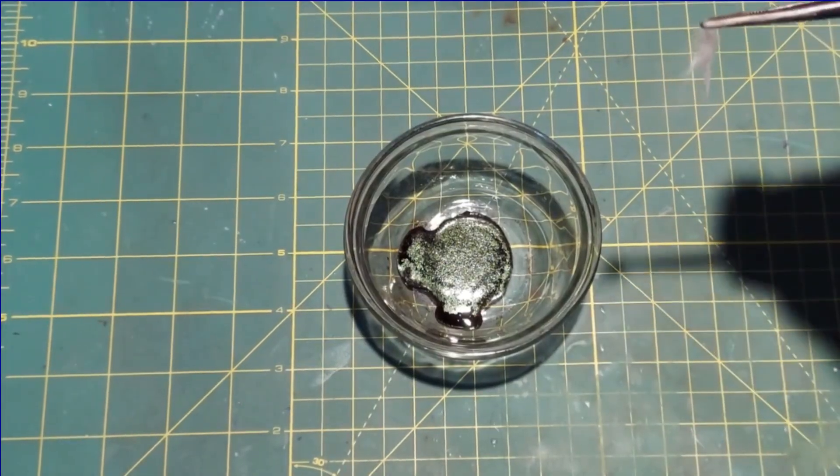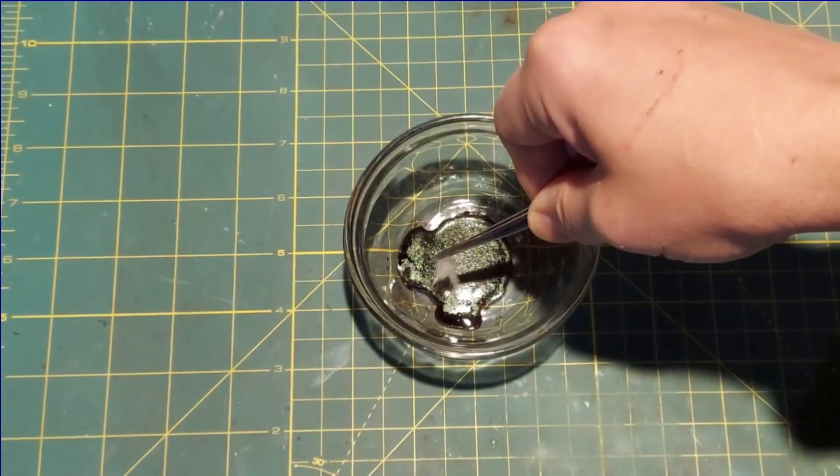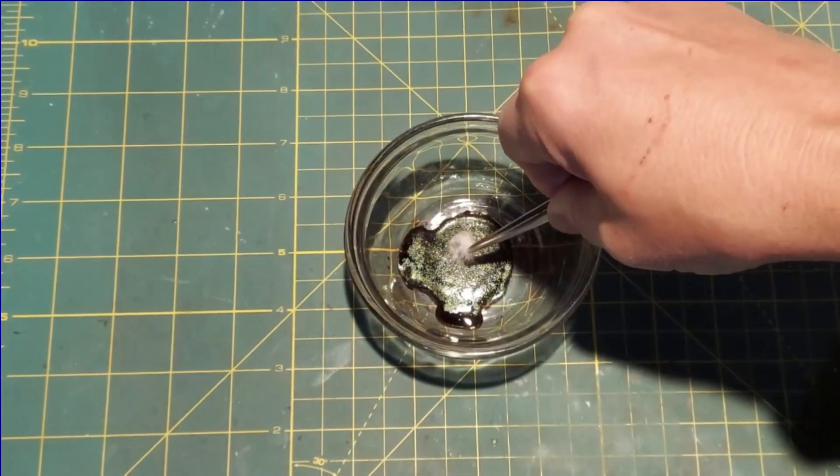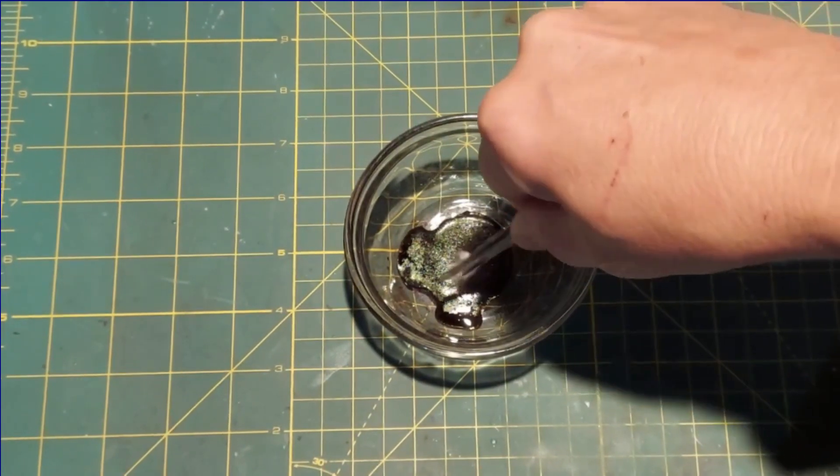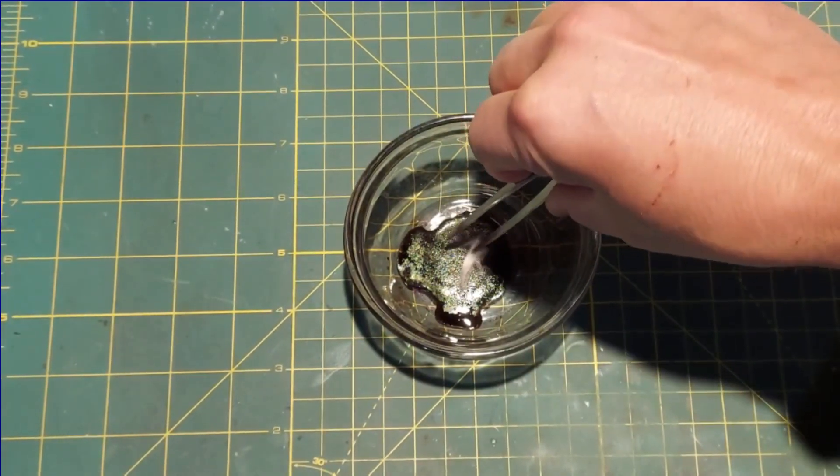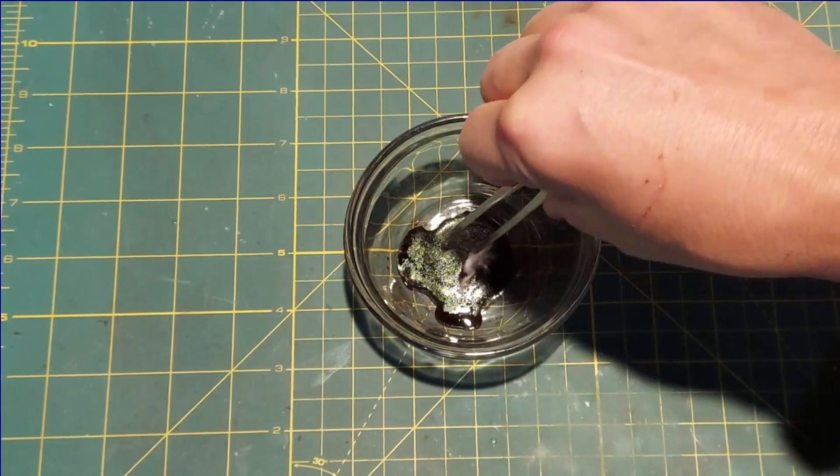So we hope we've formed the manganese heptoxide in sufficient quantities here, and I'm going to add this piece of cotton and we should see it react. If I can get it down into the material. There we go.